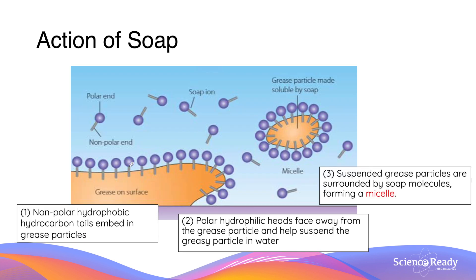Let's pretend we have a grease particle lying on a surface that we want to remove using soap. When a solution of soap is added, the non-polar hydrophobic tails of the soap molecules are embedded in the grease particle, while the hydrophilic heads dissolve in water due to their polar properties. As more and more soap molecules form this bridge between the water and the grease particle, the grease particle is eventually lifted off the surface. When the grease particle is completely surrounded by soap molecules, a structure called a micelle is formed.